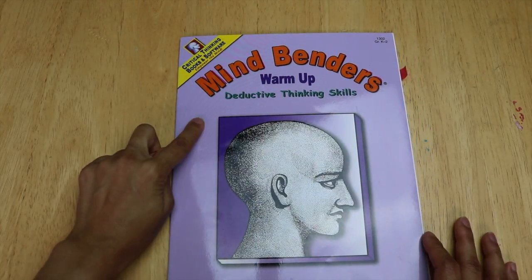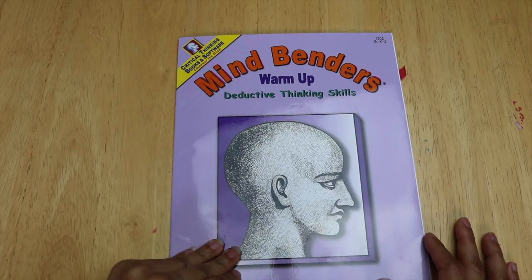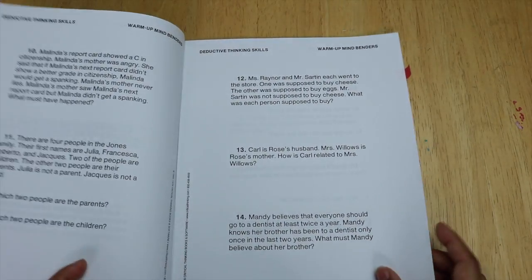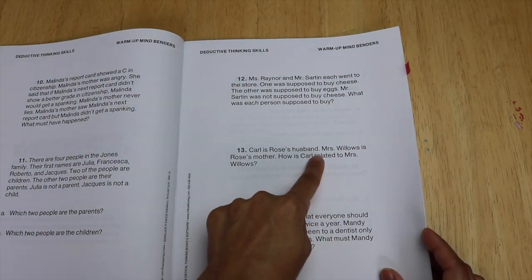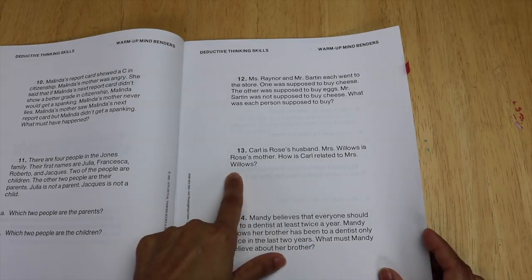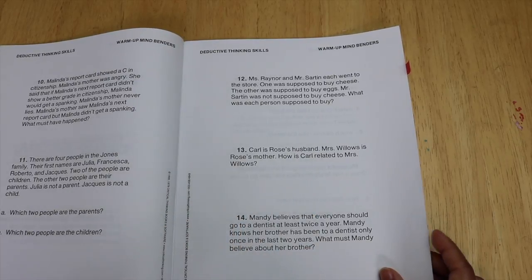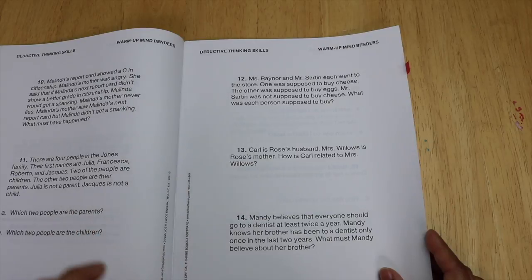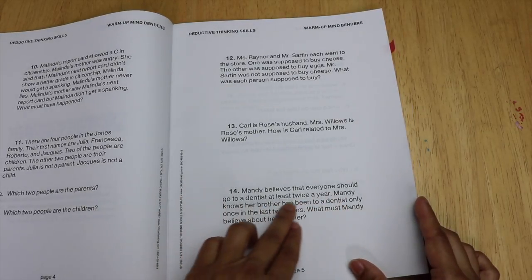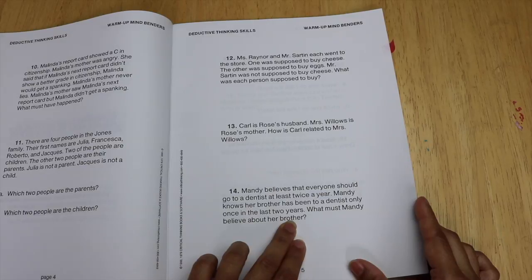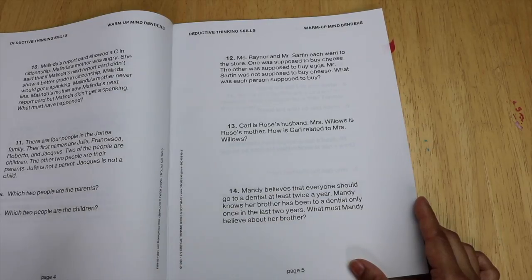Another Mindbenders book that we use is the warm-up deductive thinking skills. It's also logical thinking, but these involve no writing. Basically, they're just little puzzles. Carl is Rose's husband. Mrs. Willows is Rose's mother. How is Carl related to Mrs. Willows? They're simple things. Some of the things give us opportunities to learn family relationships and other things are just straight up logic. So Mandy believes that everyone should go to a dentist at least twice a year. Mandy knows her brother has been to a dentist only once in the last two years. What must Mandy believe about her brother? And the idea is that the child will say that her brother doesn't go to the dentist enough or something along those lines.